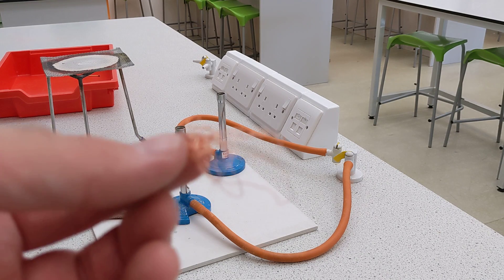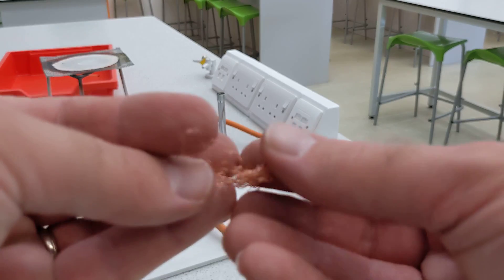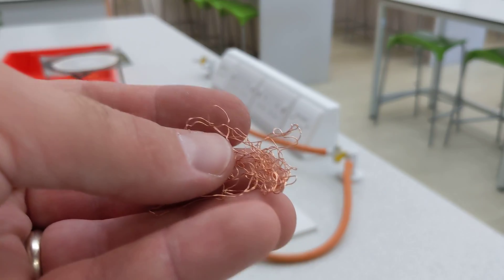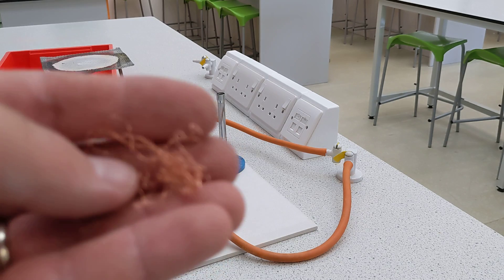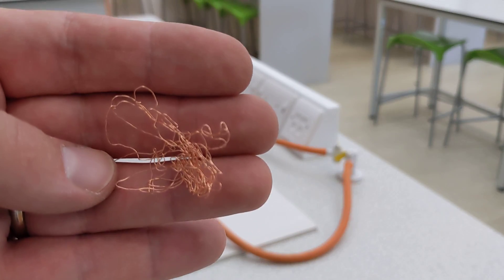After doing the required practice in an A-level where you measure Young's modulus, we were using copper for one of the groups. Well, it's all been permanently deformed by the experiment, so the copper can't really be used for anything else now.